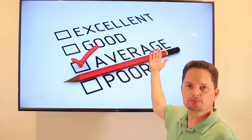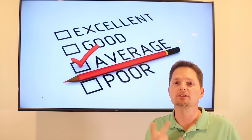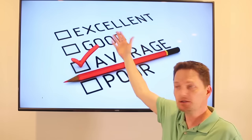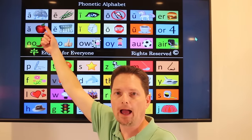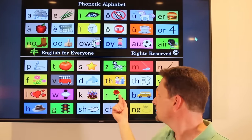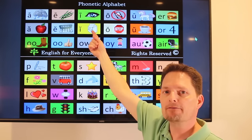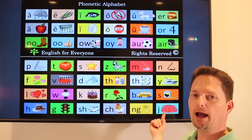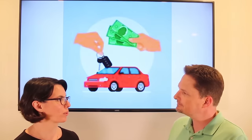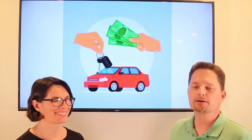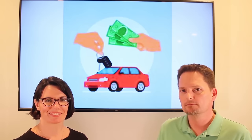Example: average. We don't say 'average,' we push it together — two syllables: 'average.' It's not excellent, it's not very good, but it's not bad or poor. It's in the middle — it's average. What's the average price of a new car? The average price of a new car is $20,000. What's the average price of a used car? The average price of a used car is $10,000. Very good.